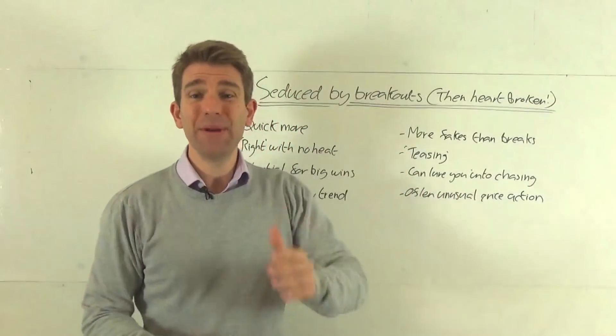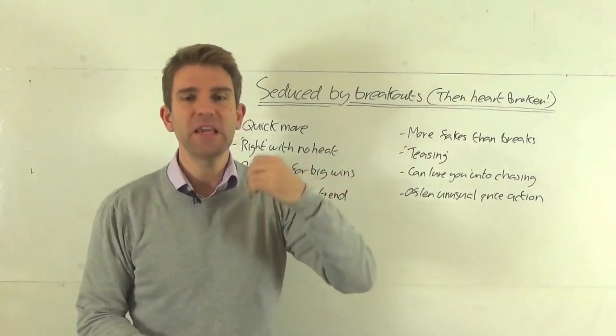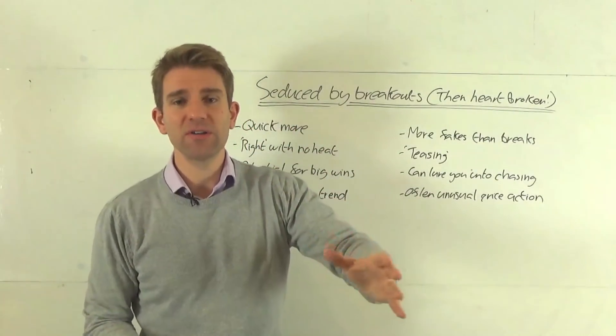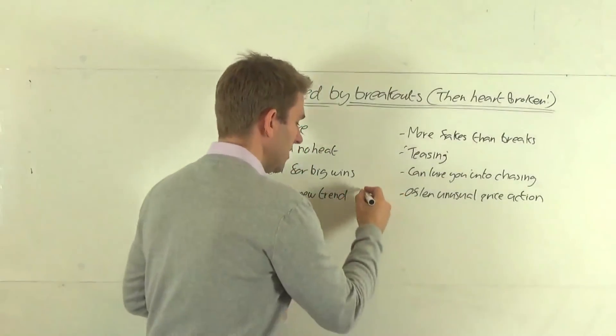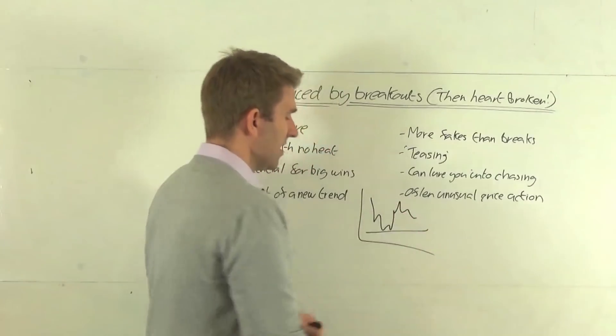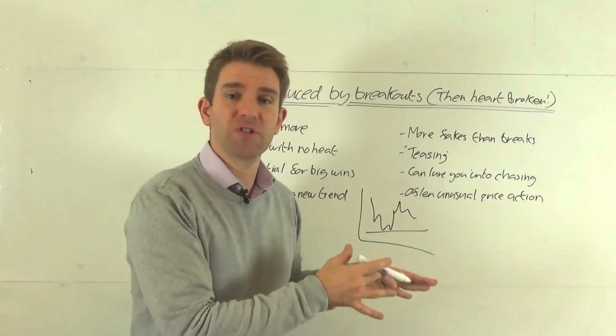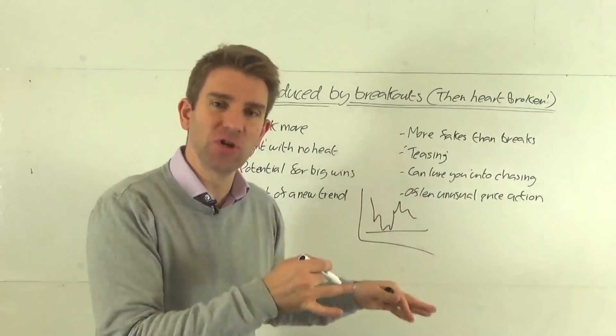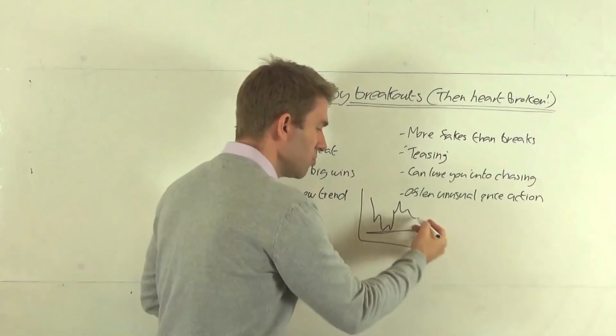But even better, trade so that you position to preempt the break. That's the thing about pre-planning with trading. In reality we should have that level. Let's say we've got our key level down here on the DAX and we've seen it test. We should be saying, okay, that has got a good chance of breaking. How do I position for that to break?